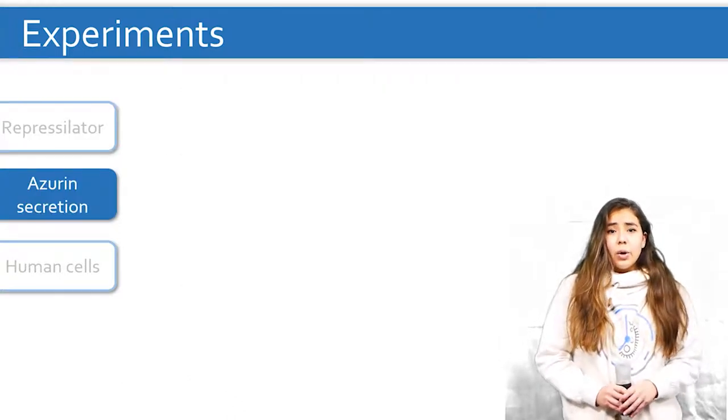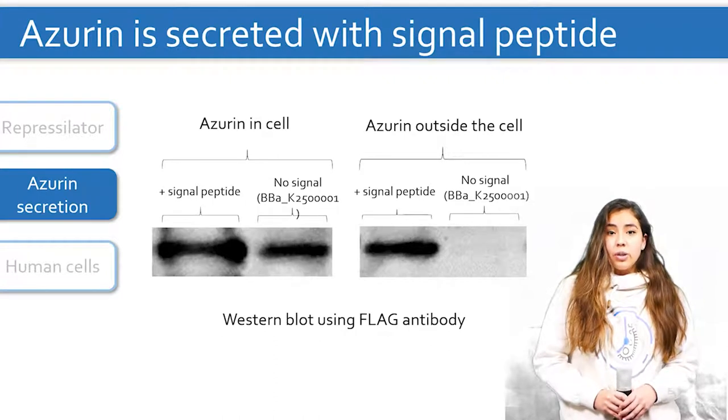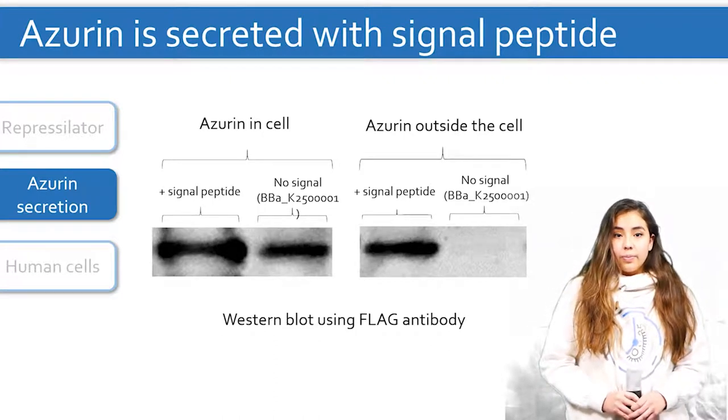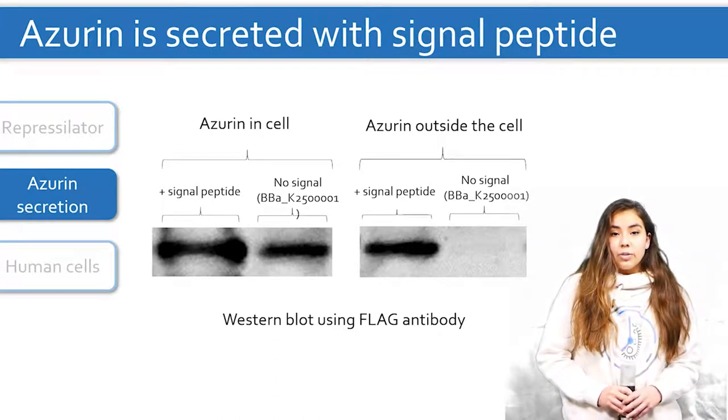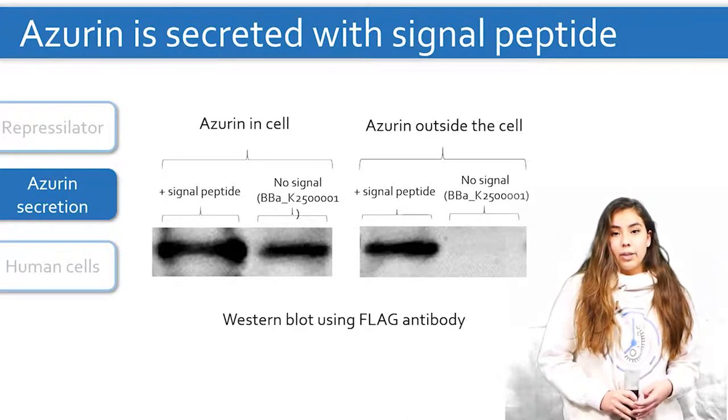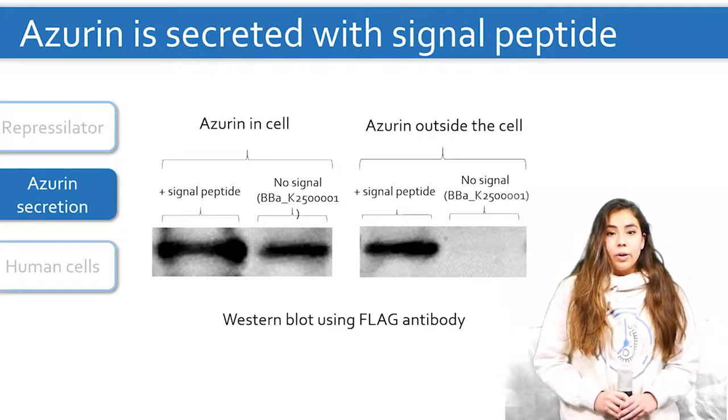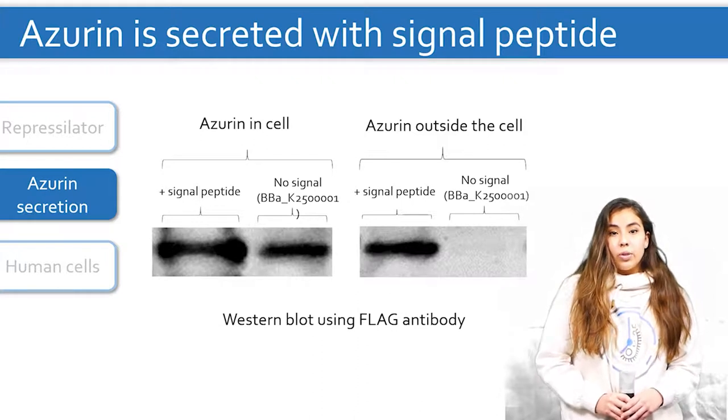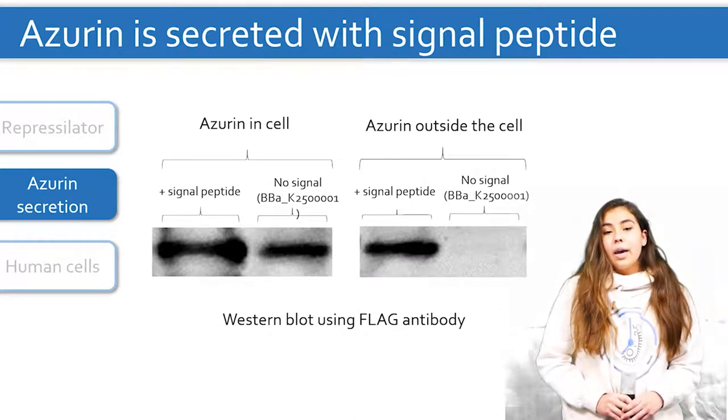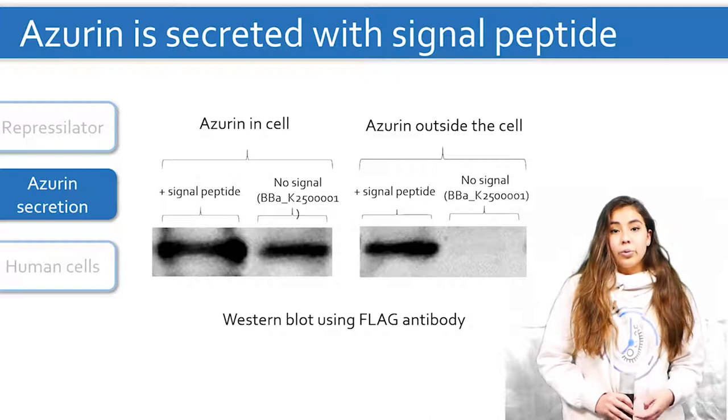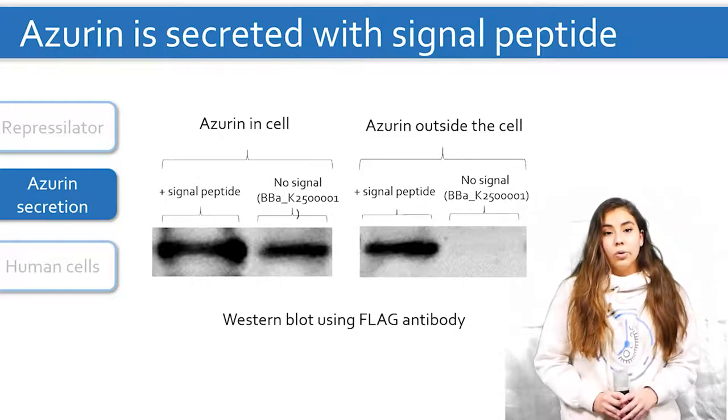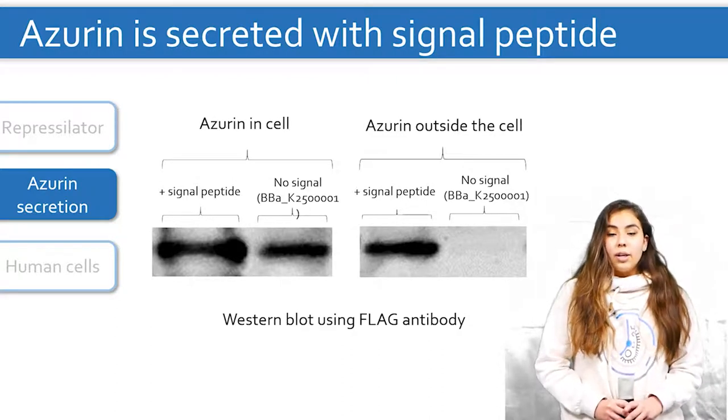At this point, we tested if we could secrete azurin using E. coli Nissle. What we found was that azurin could be secreted using its naturally occurring signal peptide. In this western blot, we compared this azurin with the one without the signal peptide. And as you can see, both of them are produced inside the cell, but only the one with the signal peptide is secreted into the medium.